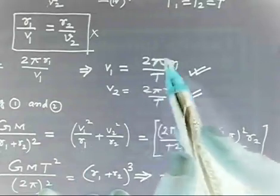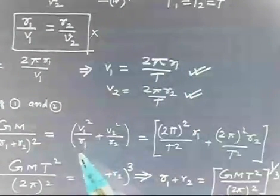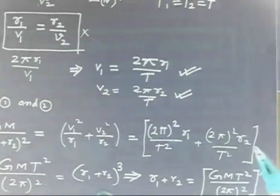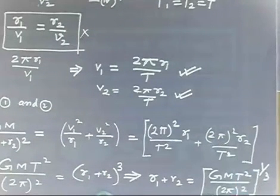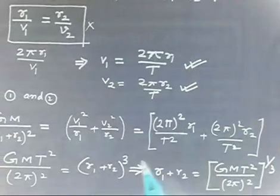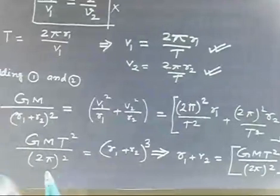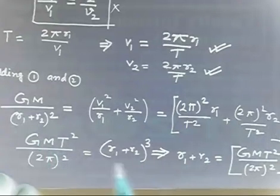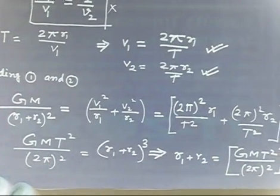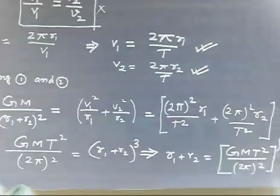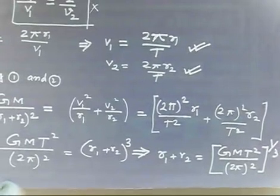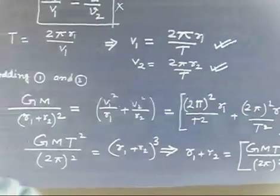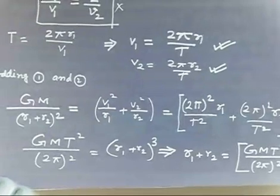So we have GM/(r1+r2)² = 4π²(r1+r2)/T². Rearranging: T²/4π² times GM equals (r1+r2)³. Therefore r1 plus r2 equals the cube root of GMT²/4π². This is the final answer for the distance between the two stars.